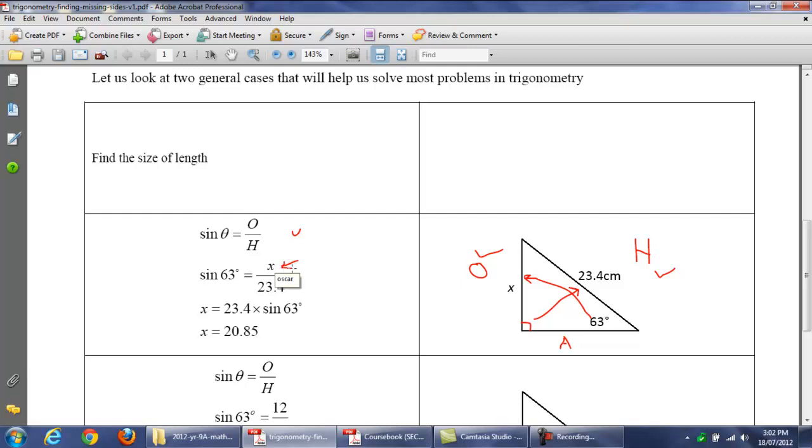Now, a little trick. If you see the X on top, then all you need to do is take this number and multiply it by that. And that's what we've done here. 23.4 times sine 63 degrees. And there's your answer.